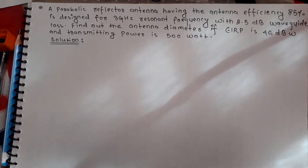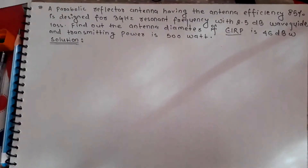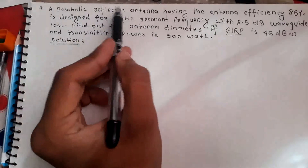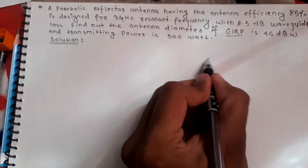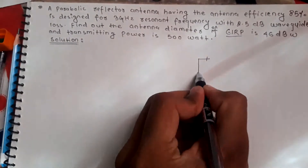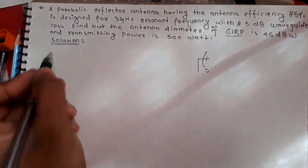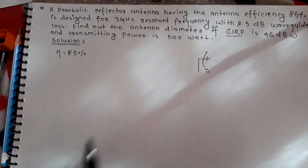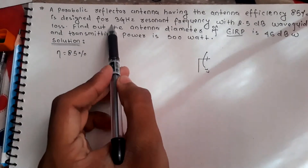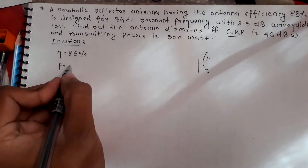Today we have another problem on effective isotropic radiated power (EIRP). A parabolic reflector antenna has an antenna efficiency of 85%, and it is designed for a frequency of operation of 3 gigahertz.